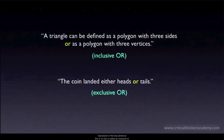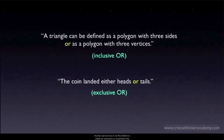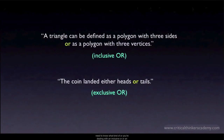The 'or' on top is called an inclusive or — it includes the case where both disjuncts can be true. The 'or' on the bottom is called an exclusive or — it excludes the case where both disjuncts can be true. When examining arguments that use 'or,' you need to know what kind of 'or' you're dealing with: an inclusive or or an exclusive or, because the logic is different.